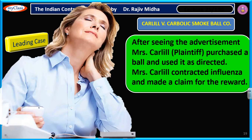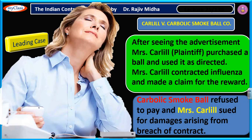After seeing the advertisement, Mrs. Carlyle — she is the plaintiff — purchased a smokeball and used it as directed. She used the company's medicine in exactly the manner the company had specified. Mrs. Carlyle contracted influenza and made a claim for the reward. Even after using the medicine, Mrs. Carlyle contracted influenza, so she filed a claim that she should be given the reward of 200 pounds. Carbolic Smokeball Company refused to pay and Mrs. Carlyle sued for damages arising from the breach of contract.